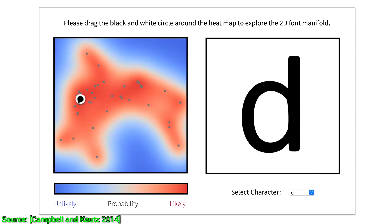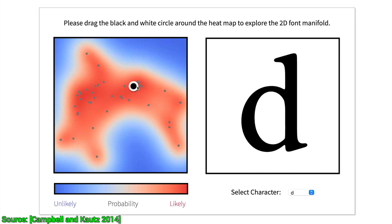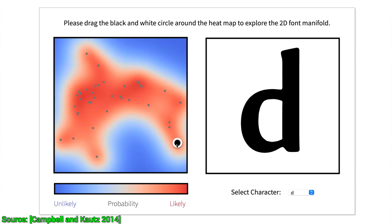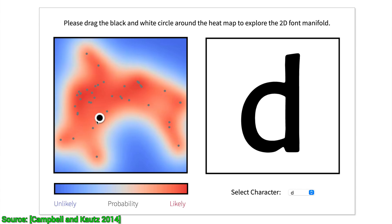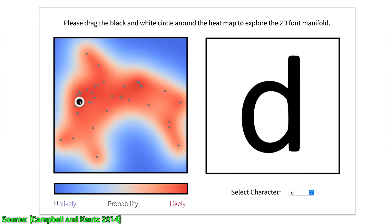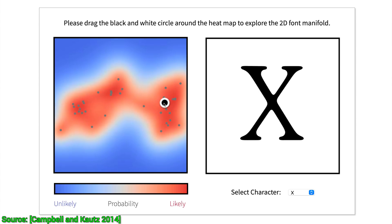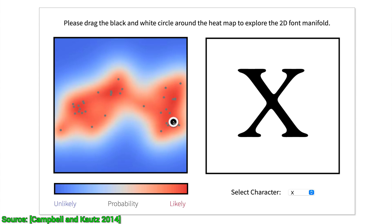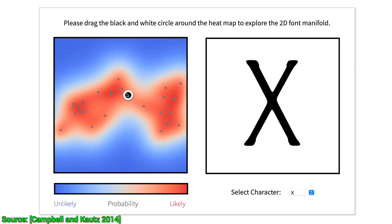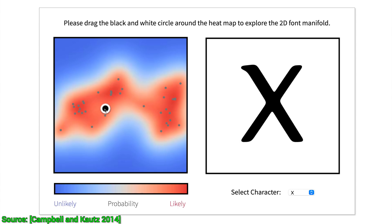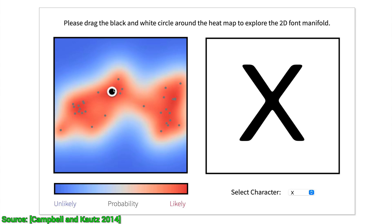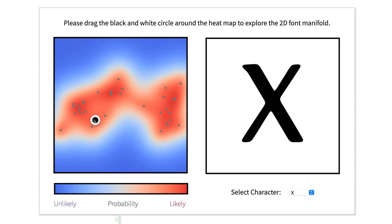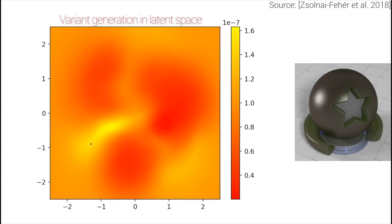What you see here is a 2D latent space for generating different fonts. It is hard to explain why these fonts are similar, but most of us would agree that they indeed share some common properties. The cool thing here is that we can explore this latent space with our cursor and generate all kinds of new fonts. You can try this work in your browser — the link is available in the video description. And luckily, we can build a latent space not only for fonts, but for nearly anything.